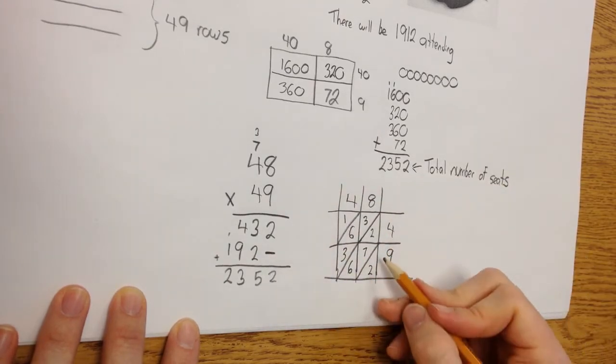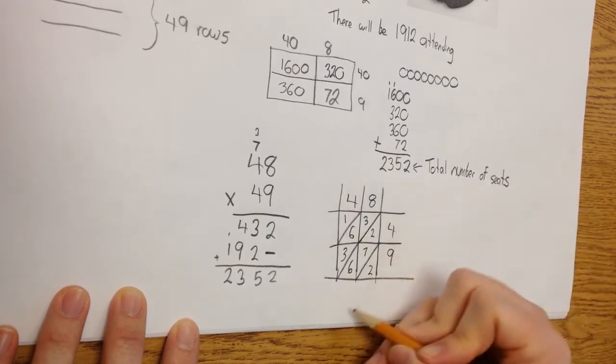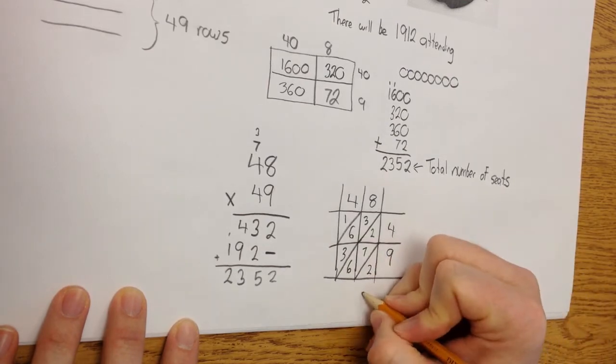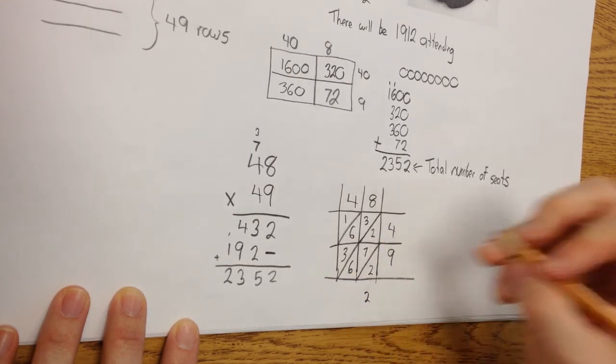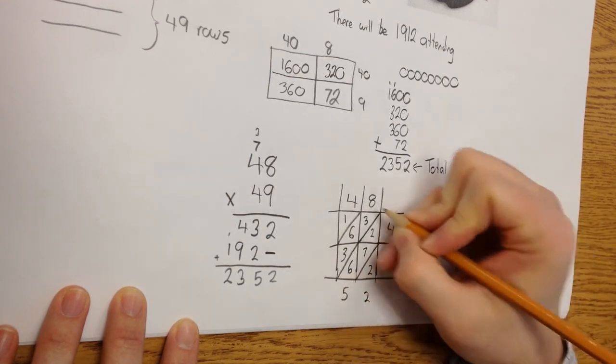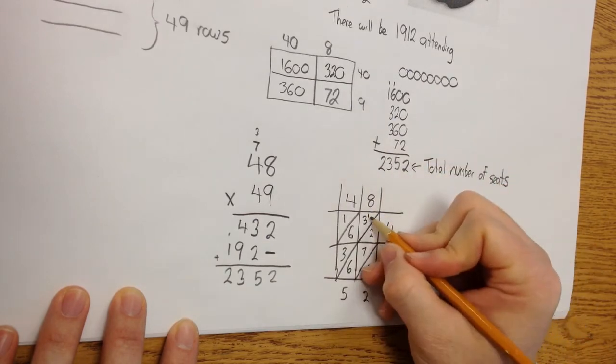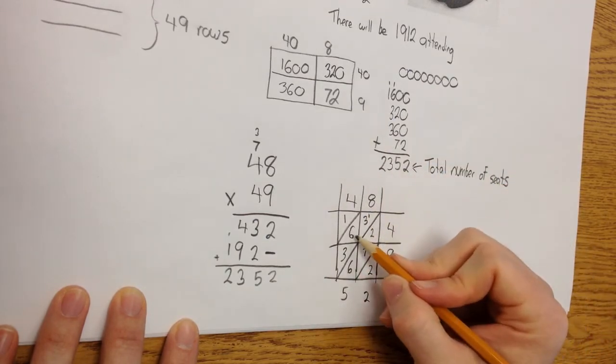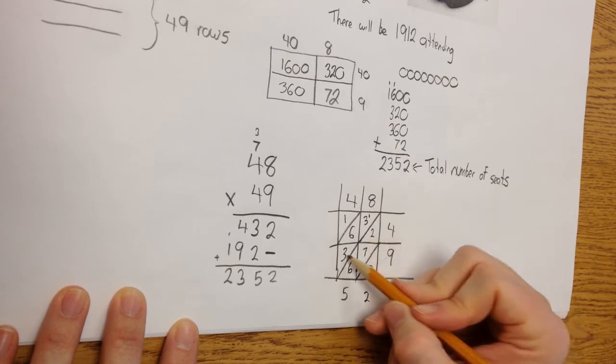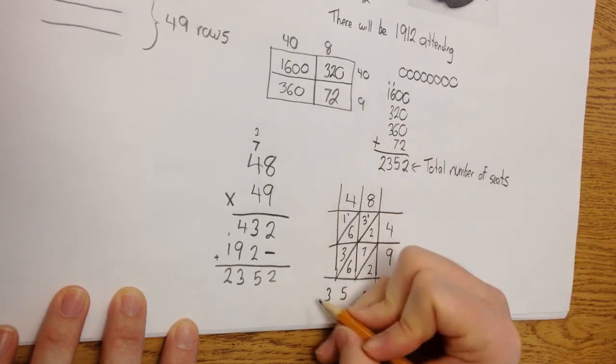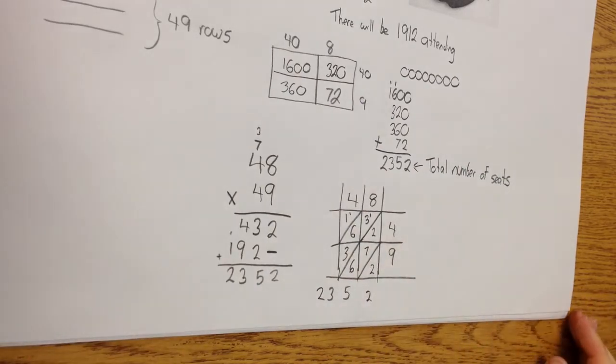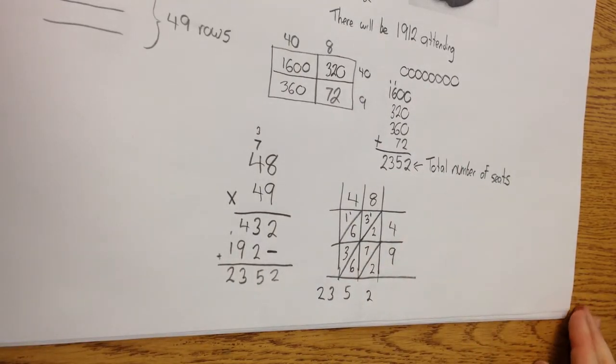And all we have to do is add up our numbers along here. So the only one diagonally in this column is a 2. And I do 2 plus 7 plus 6. 2 plus 7 is 9, plus 6 is 15. Carry the 1. 1 plus 3 is 4, plus 6 is 10, plus 3 is 13. Carry the 1. 1 plus 1 is 2. And look at that. I got the same answer again. 2,352.